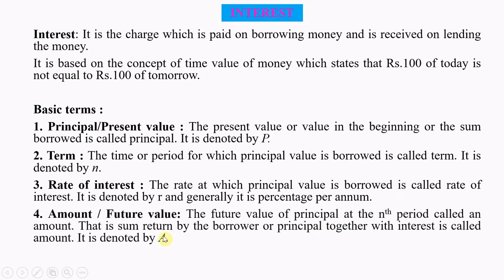Number 4: Amount, also known as Future Value. The future value of Principal at the nth period is called Amount. That is, the sum returned by the borrower — principal together with interest — is called Amount. It is denoted by capital letter A.